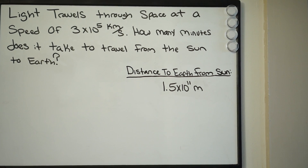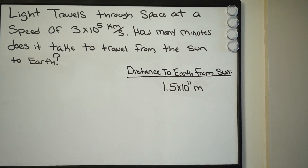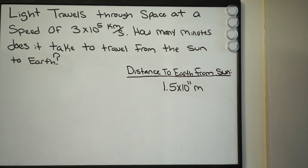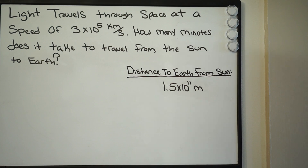In this particular problem we're going to be talking about properties of exponents and scientific notation. We're given a word problem, so let's go ahead and read it. It says: light travels through space at a speed of 3 times 10 to the 5th power, in kilometers per second. How many minutes does it take to travel from the sun to earth?